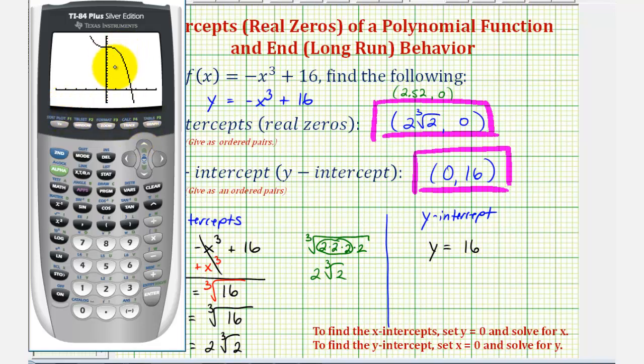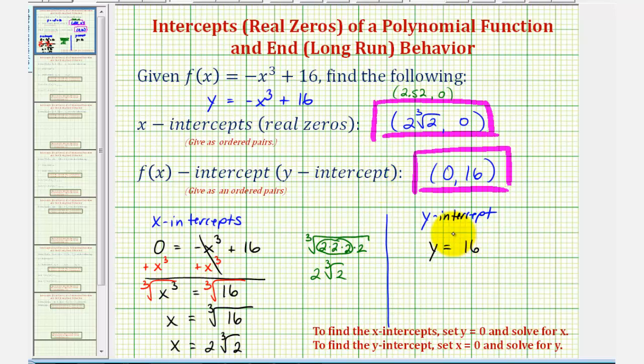And now to check the y-intercept, we're going to use the table of values. So to set up the table, let's press second window. Start the table at zero. Enter. Then changing the table, let's change this to ones. So the table will start at zero and then change by ones. And now if we press second graph, very quickly notice that when x is zero, y is 16, verifying our y-intercept. I hope you found this helpful.